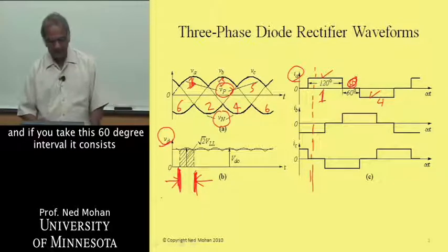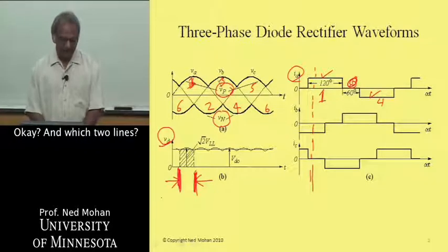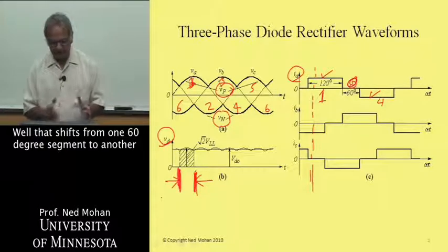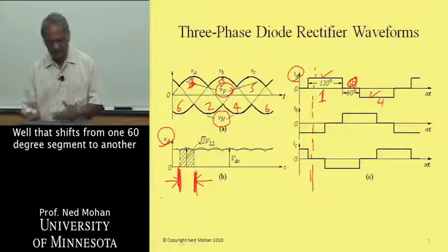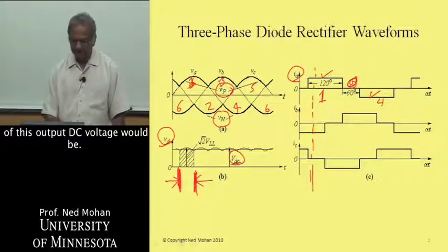If you take this 60 degree interval, it consists of line-to-line voltage. And which two lines? Well, that shifts from one 60 degree segment to another. And we can calculate what the average of this output DC voltage would be.